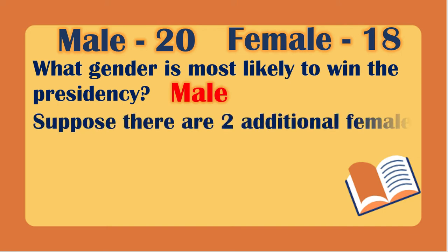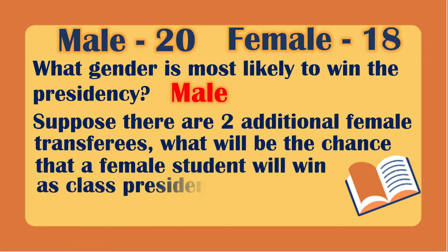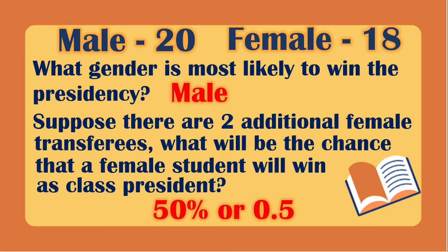Suppose there are 2 additional female transferees. Since we already have 18 female students and we add 2, it becomes 20. So we have 20 female and 20 male. The chance that a female student will win as class president is 50%, or 0.5, which is 1/2 in fraction form.